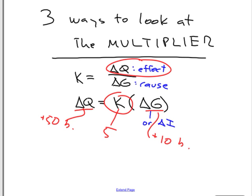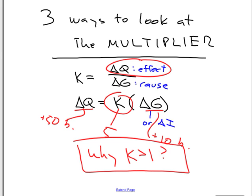Why is the multiplier something like 5 and not 1? That's our question. Why do you get extra bang for your buck?